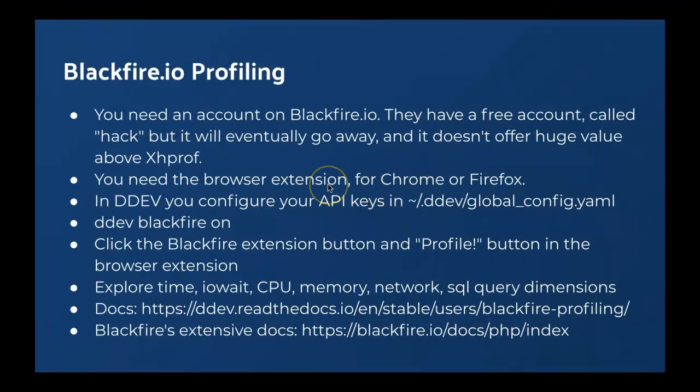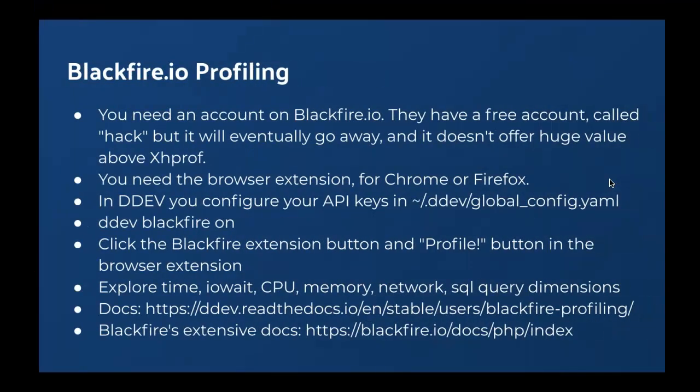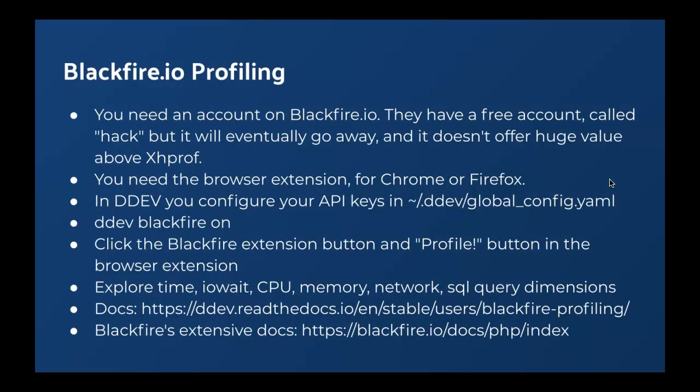Once you have an account, you also need the browser extension for Chrome or Firefox. In DDEV, you configure the API keys in the global config — it's very easy to do. You can edit that file or use the command that's in the docs. Then we do the same basic thing: ddev blackfire on. Here though, we click the Blackfire extension button and then explicitly profile the page. It's not being collected automatically for us.